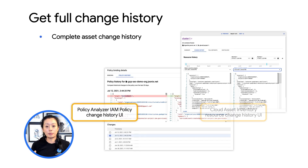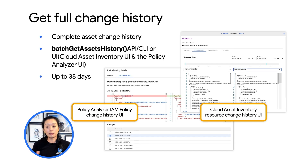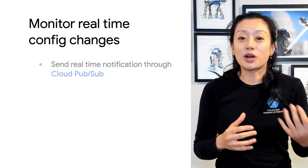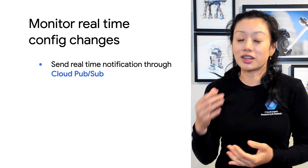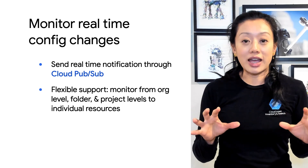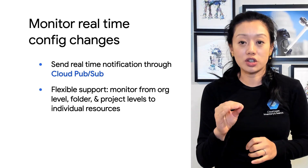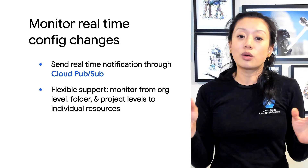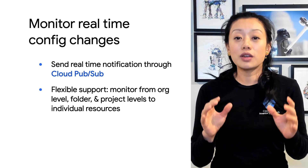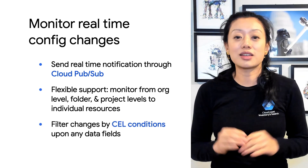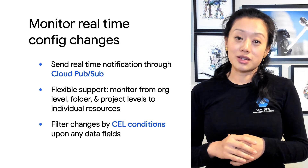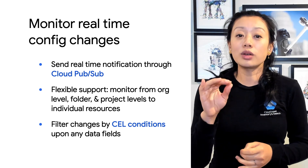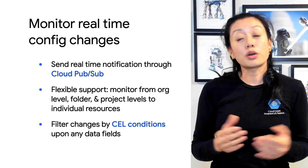You can also get a full change history by using the UI or API, which I'll demo later. Now, after getting full visibility of your entire inventory plus history, we also offer a real-time notification feature for you to easily achieve continuous monitoring. It allows you to monitor assets and will send a pub/sub message when a change occurs. You can define your criteria by asset name, asset type, or by org, folder, and project. You can even use CEL conditions — CEL is the expression language created by Google. For example, you can say: notify me as soon as any firewall rules get changed in my org, or notify me only if an IAM policy is changed to be open, or when a VM is deleted.